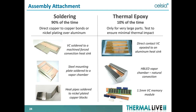For assembly attachments, over 90% of applications use solder. Solder provides both a good mechanical joint and a good thermal joint. Aluminum parts are nickel-plated so they can be directly soldered between copper and aluminum parts using the nickel. Thermal epoxy is sometimes used when power densities are relatively low and parts are relatively large. Soldering will give better performance.